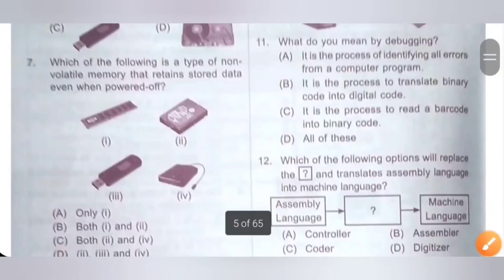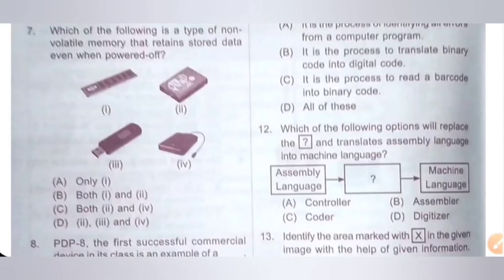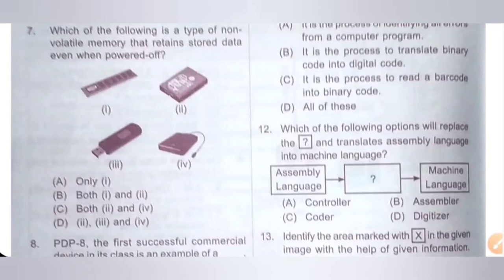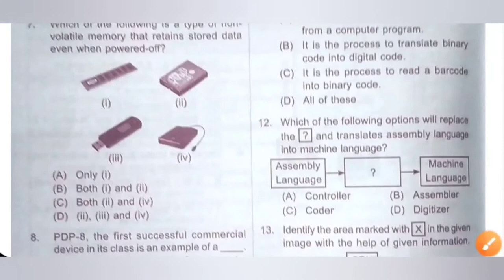Question 7: Which of the following is a type of non-volatile memory that retains stored data even when powered off? Options: 1. RAM, 2. Internal hard disk, 3. Flash drive, 4. External hard disk. RAM is a volatile memory — it loses its information when powered off. Options 2, 3, and 4 are types of non-volatile memory that retain stored data even when powered off. Option D is the correct answer.